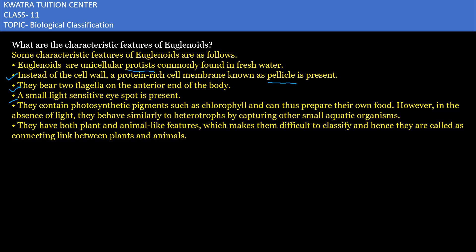Euglenoids have a very interesting feature. They contain a photosynthetic pigment such as chlorophyll. So if light is present, they can prepare their own food through photosynthesis. If light is absent, they can feed on small aquatic organisms.